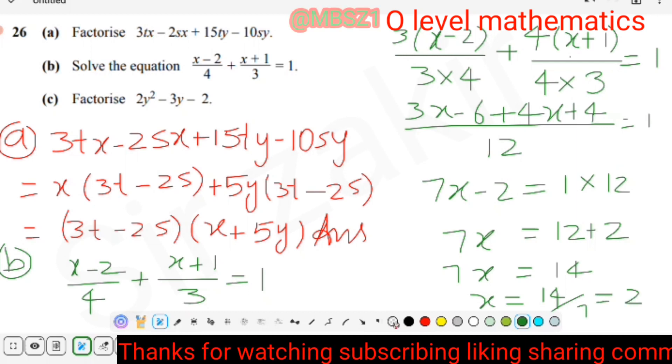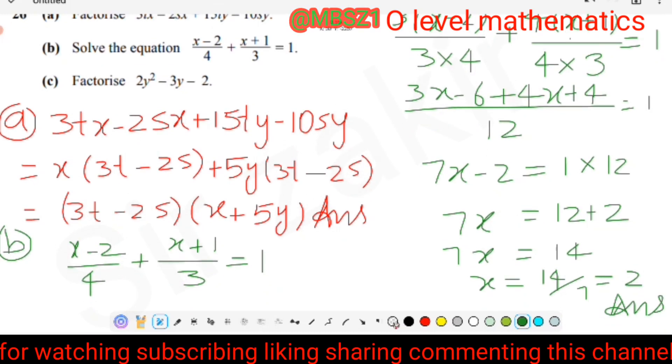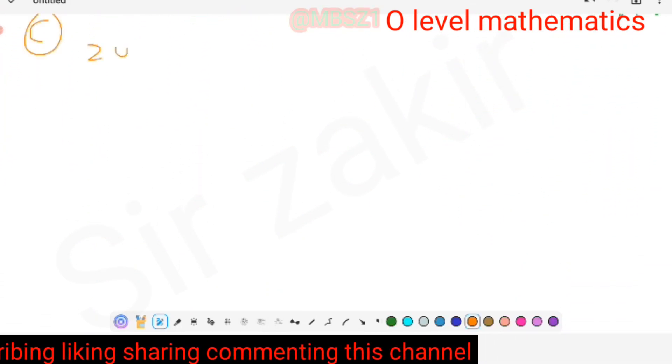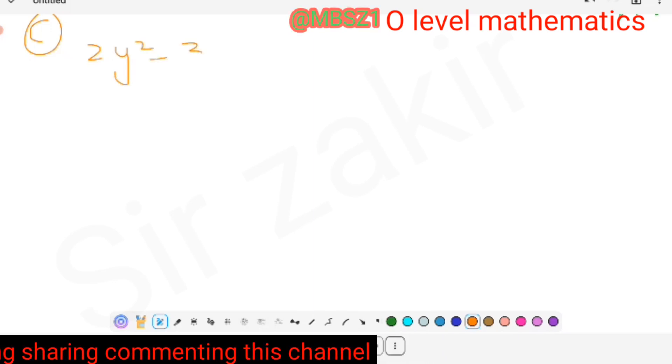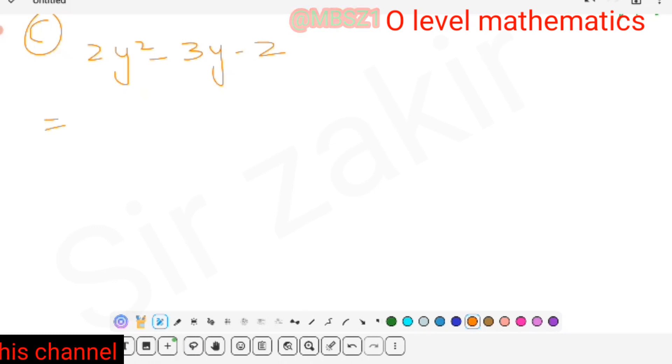Now we look at part C. Part C is 2y² - 3y - 2. We copy it here: 2y² - 3y - 2. We will apply midterm break method. We will break minus 3.